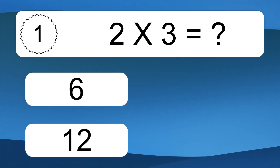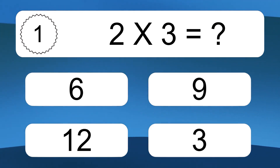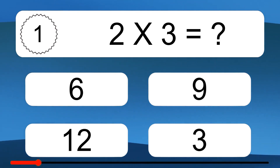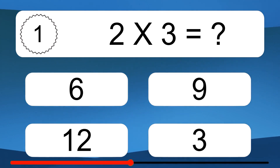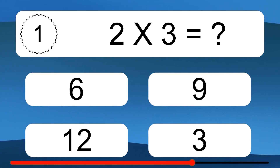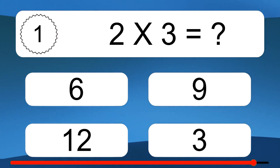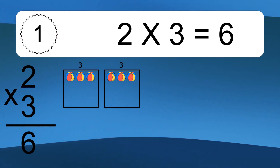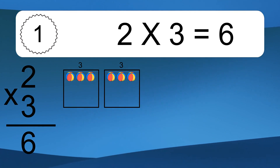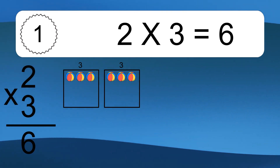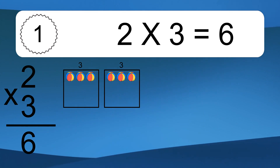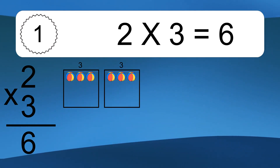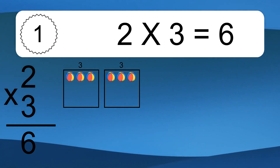2 times 3 equals what? 2 times 3 equals 6. We have 2 boxes, and each box has 3 colorful balls inside. If you count all the balls in all the boxes together, you will have 2 times 3 balls. This equals 6 balls.